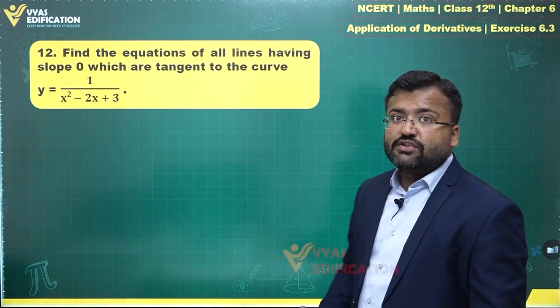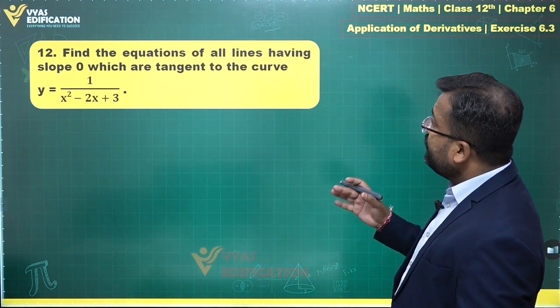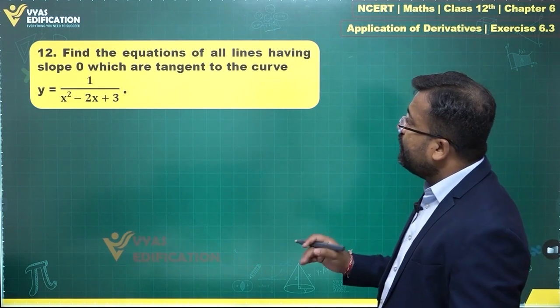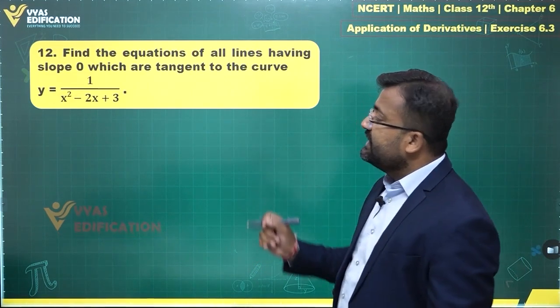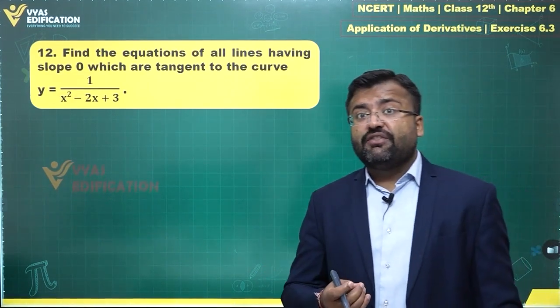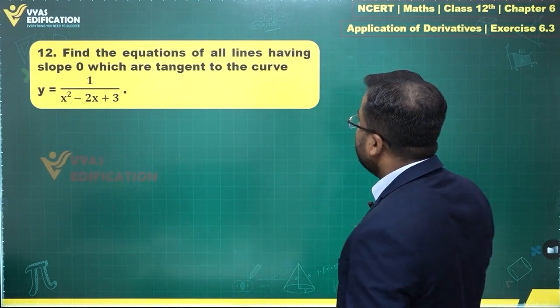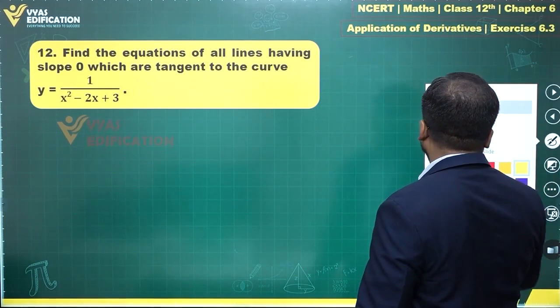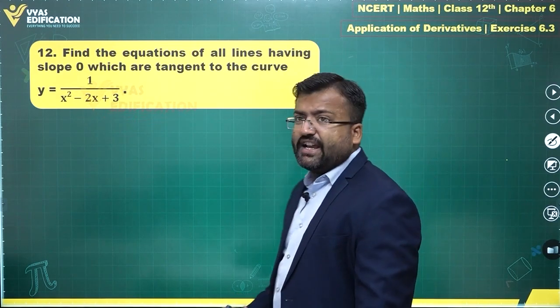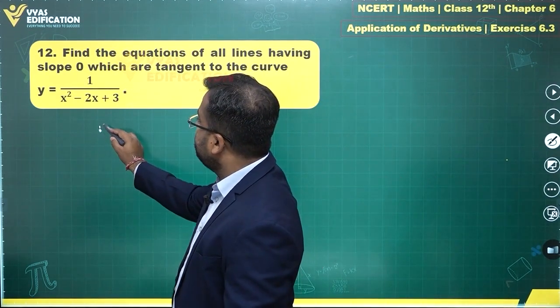Let's discuss question 12. Find the equations of all lines having slope 0 which are tangent to the curve. This time the slope is given to be 0 for the tangent and the curve is given: y equals 1 over x squared minus 2x plus 3.